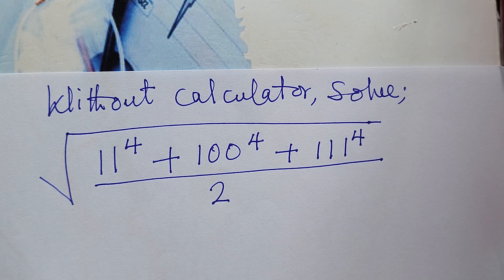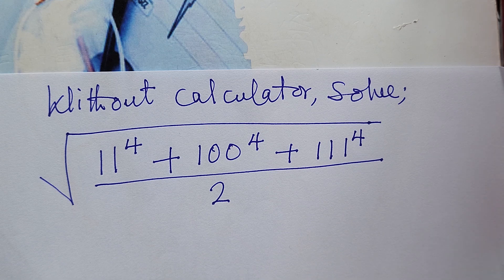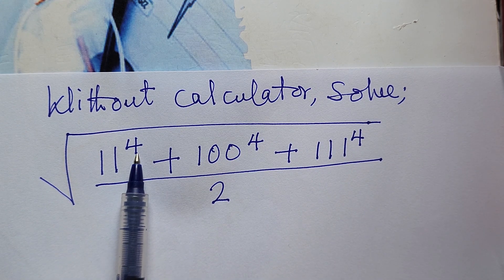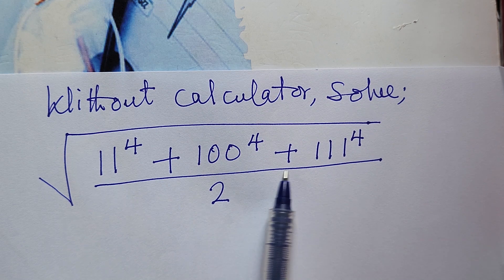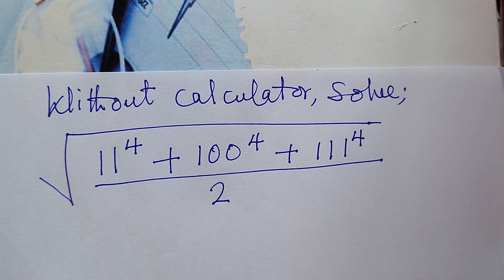Hello, welcome to today's class. Today we have a nice math olympiad challenge. We'll be asked to solve this challenge without the use of a calculator. The question says: solve the square root of 11 to the power of 4 plus 100 to the power of 4 plus 111 to the power of 4, all over 2.